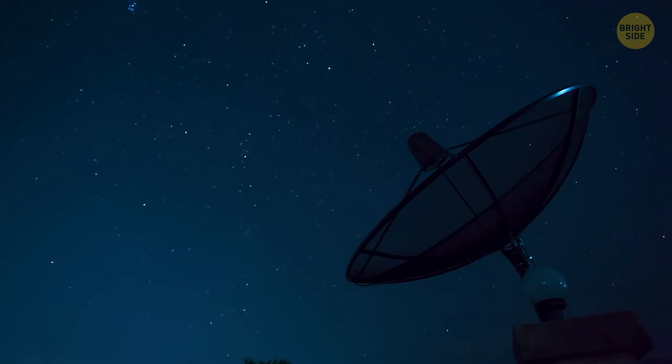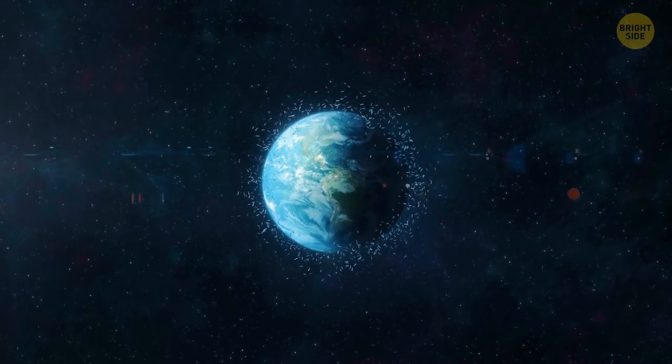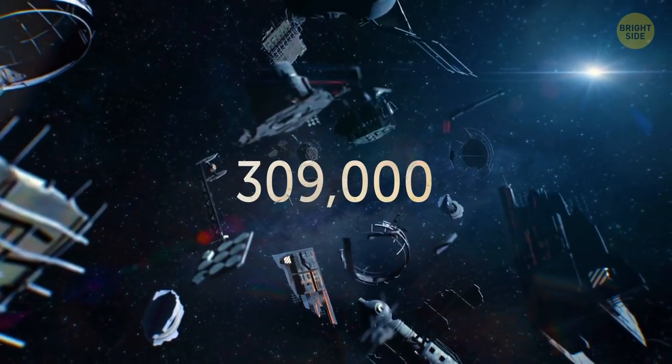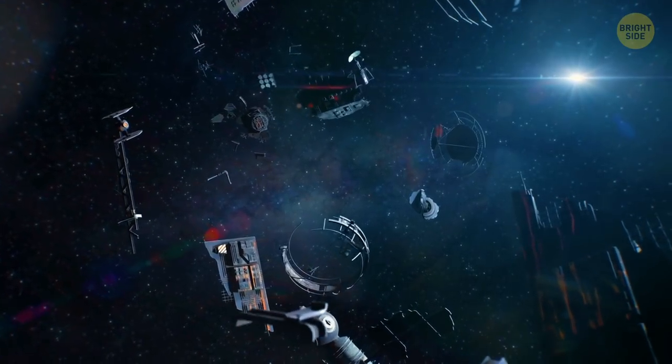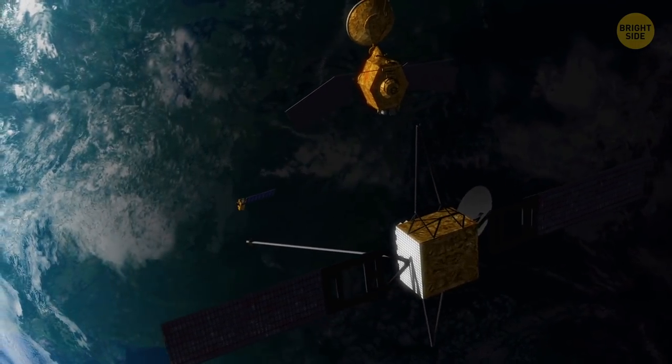There is something called Space Surveillance Network that keeps track of how much space junk orbits the Earth and who's responsible for it. Now there are more than 309,000 rocket parts and inactive satellites orbiting the Earth. Not counting the working satellites and stuff. Kinda getting crowded up there.